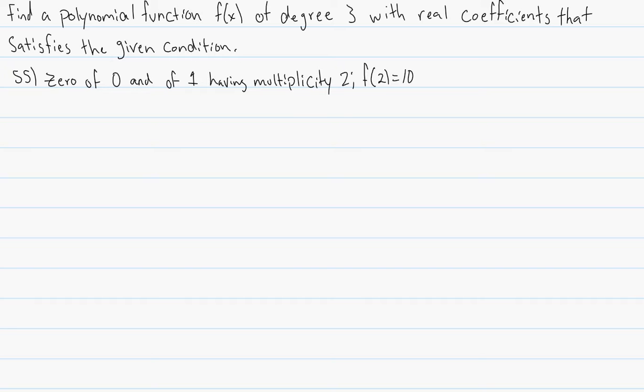Let's try to solve this problem. It says find a polynomial function f of x of degree 3 with real coefficients that satisfy the given conditions. So zero of 0 and of 1 having multiplicity of 2 and that f of 2 is equal to 10.